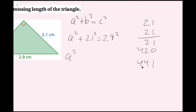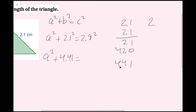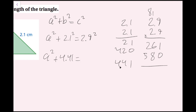So this is A squared plus 4.41 equals, and then 2.9 times 2.9 gives me 8.41. Now, when solving this equation, I want to isolate the term being squared so I can take the square root of both sides. I'm going to subtract 4.41 from both sides. The decimal components cancel, so I get 4 equals A squared.